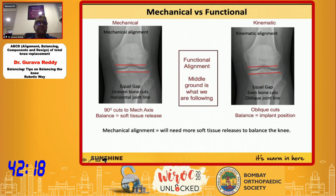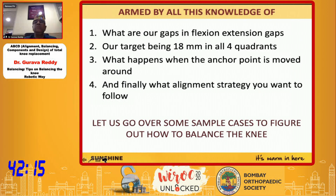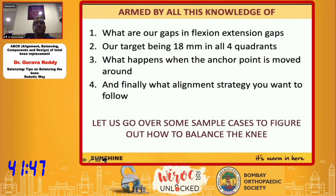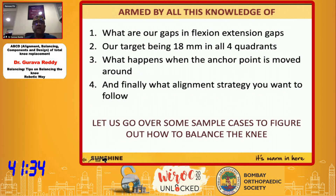By changing the implant position three degrees this way or that way, you minimize the need for soft tissue release. The focus now is on the milieu intérieur — the joint has multiple ligaments and we cannot keep releasing them. The more you preserve the soft tissue envelope, the more stable the knee. That's where the titration concept comes in: we alter bone cuts to achieve the endpoint rather than cutting soft tissue.